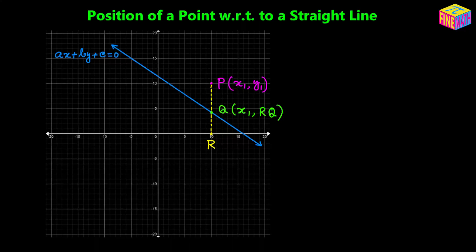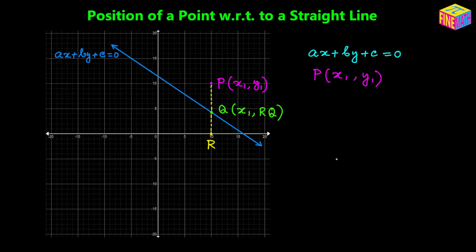In the diagram, I have taken an example where we have a straight line whose equation is ax plus by plus c equals zero, and a point P whose coordinates are x₁, y₁. If we drop a perpendicular from P onto the x-axis, the perpendicular lands on point R on the x-axis. This perpendicular also intersects the line at point Q, so Q's coordinates would be x₁ comma RQ — whatever that distance is.